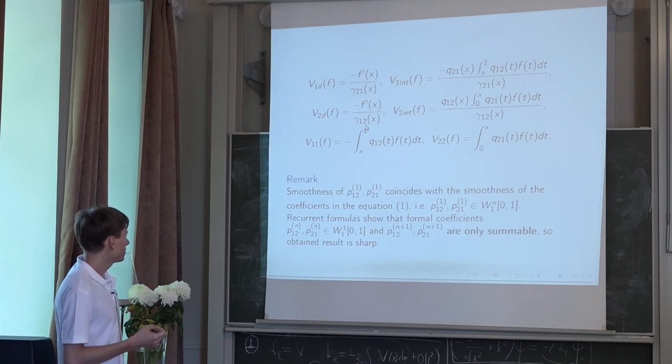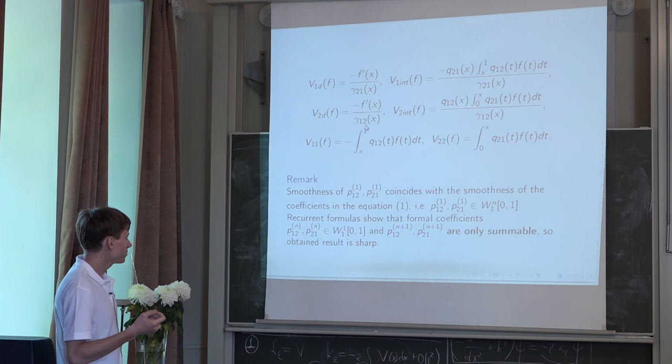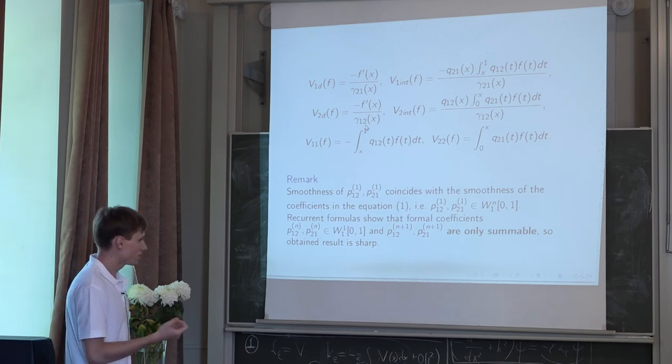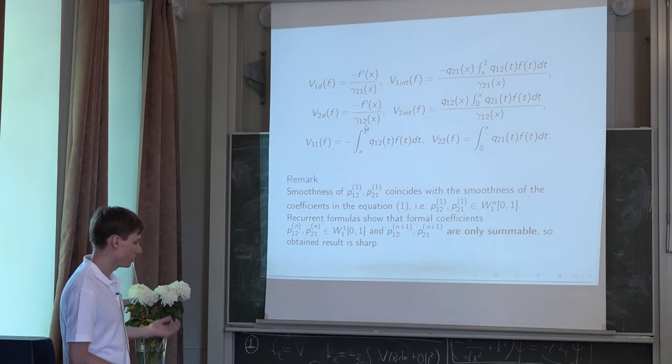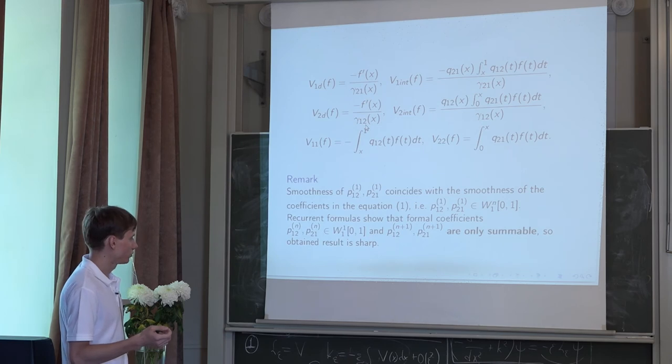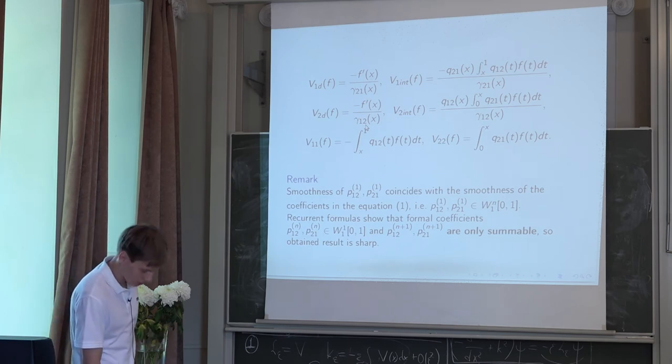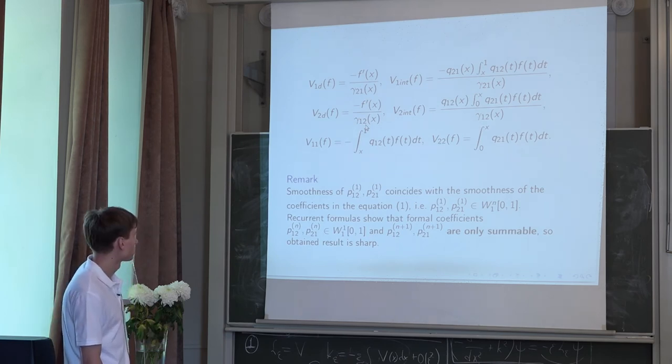the n-th term of asymptotics near lambda to the power minus n, it is absolutely continuous functions. And in the general case, next coefficients are only summable. So the obtained result is sharp in that sense because we want to find a classical solution y and asymptotical representation for them.